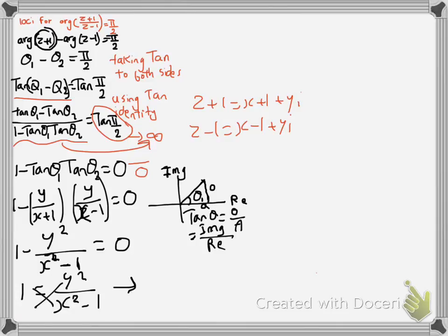Cross multiply, x square minus one equal y square. Rearrange, you will have x square plus y square equal one.